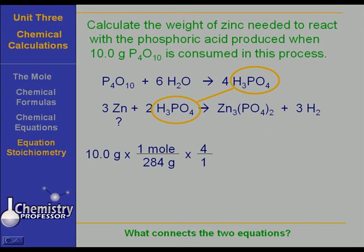Don't change to quantity. Moles works perfectly well. You're at moles of phosphoric acid. Now go to moles of zinc. And the ratio is three moles of zinc to two moles of phosphoric acid. The amount of phosphoric acid produced in the first equation is the amount of phosphoric acid that is consumed in the second equation. They are the same.